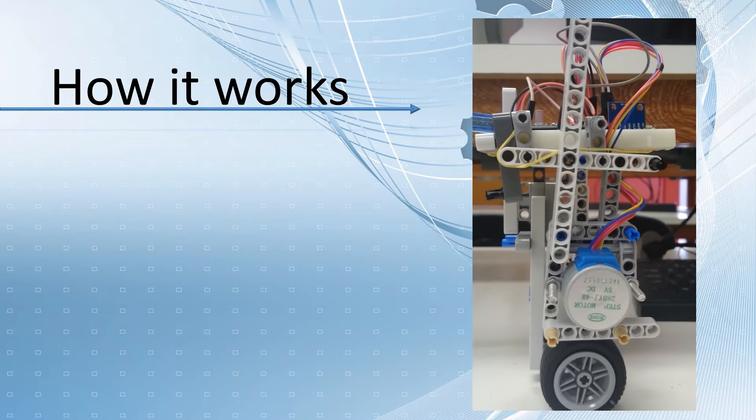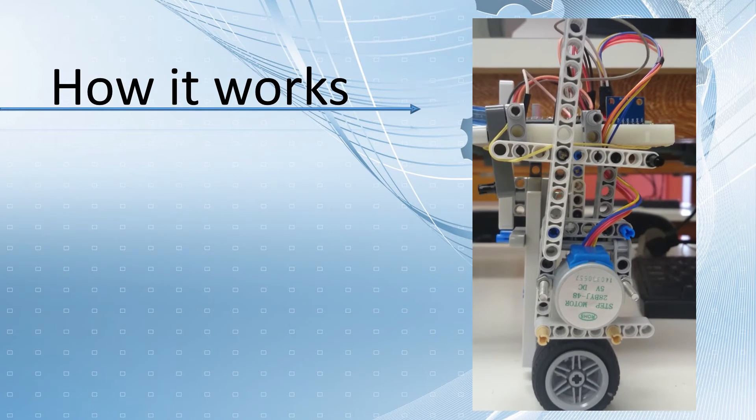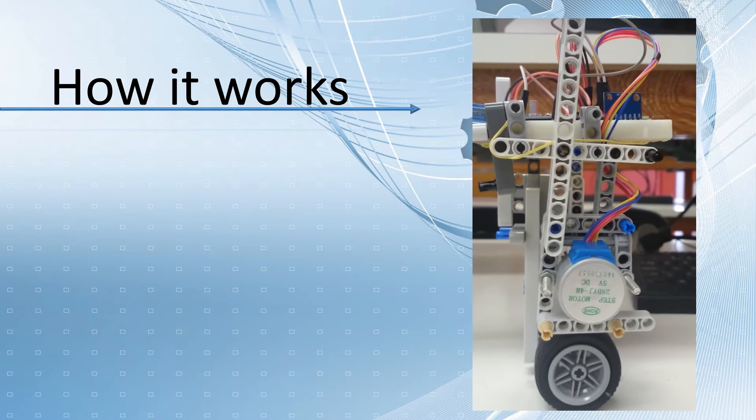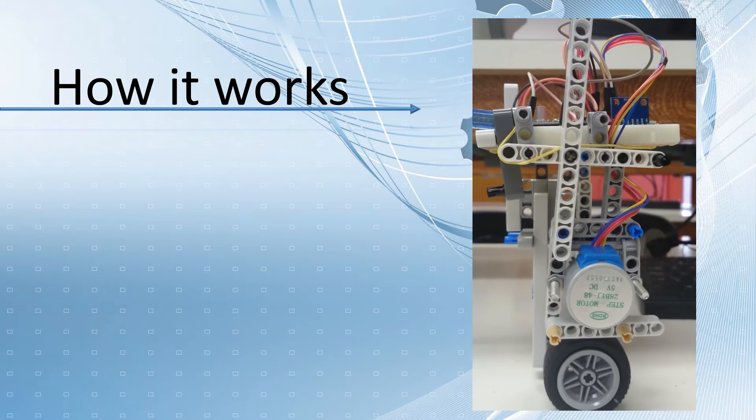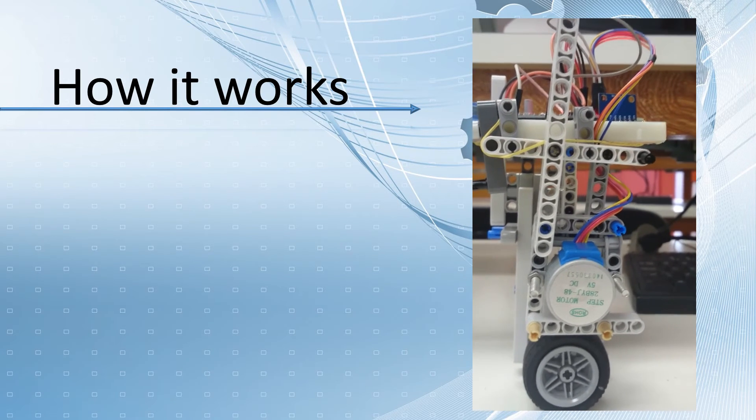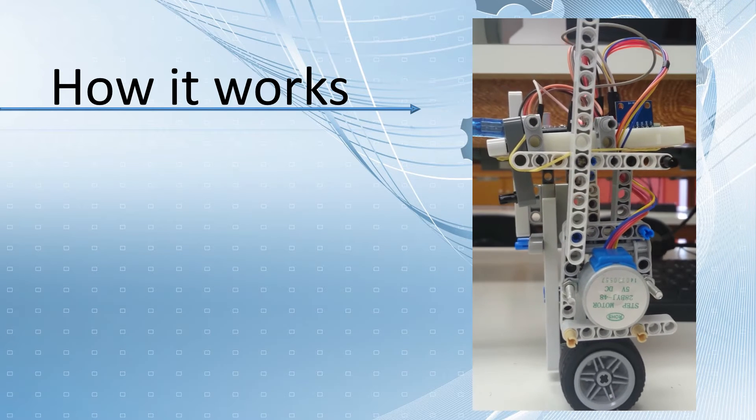The main purpose of the robot is to maintain itself balanced. For that, the MPU sensor measures the X, Y and Z coordinates and then the step motor is responsible for the movement against the fall.